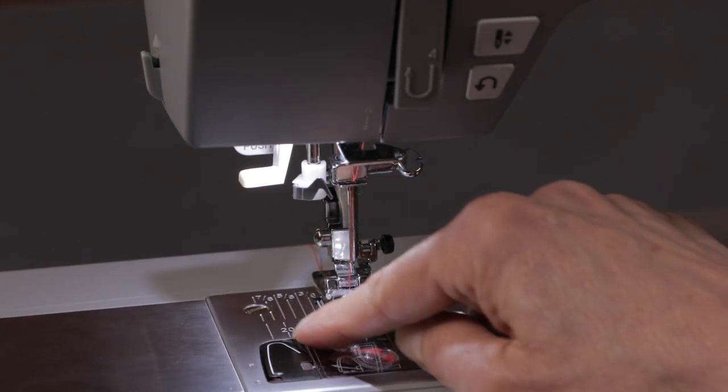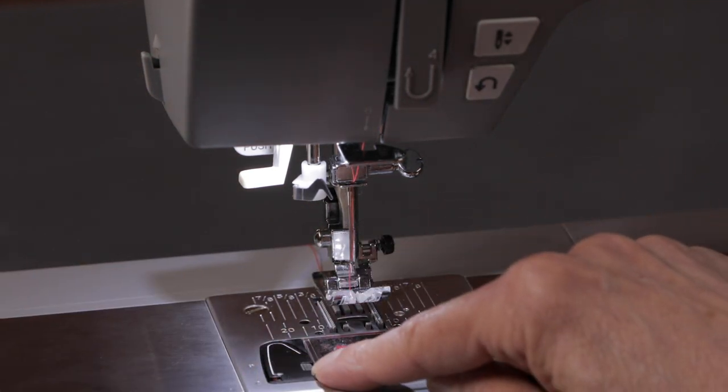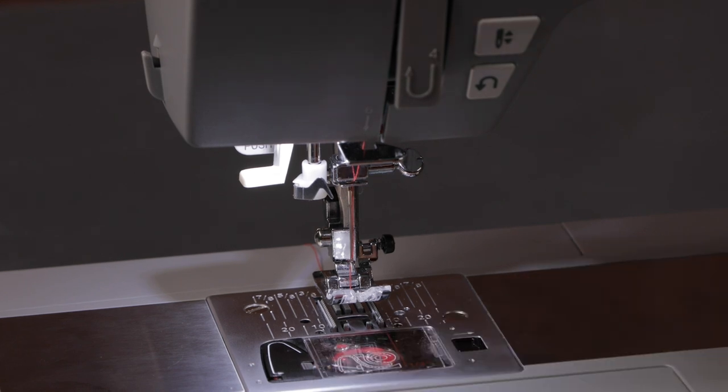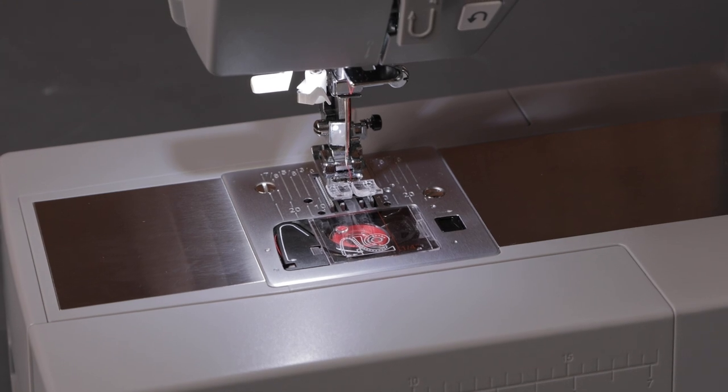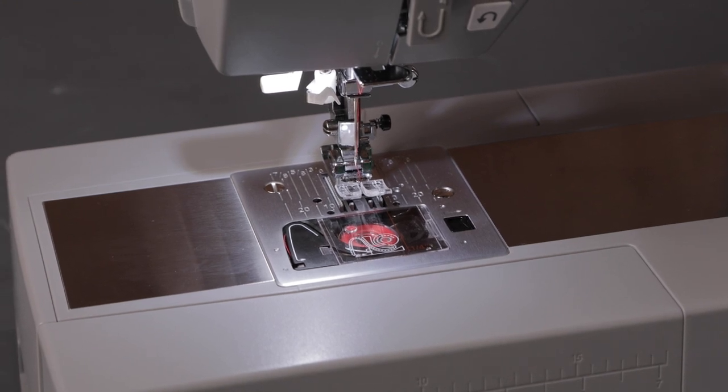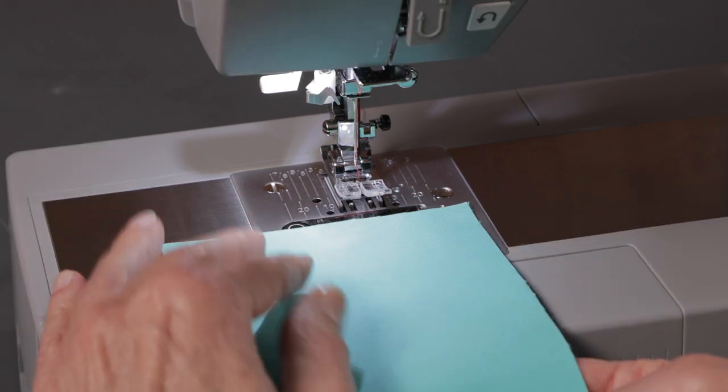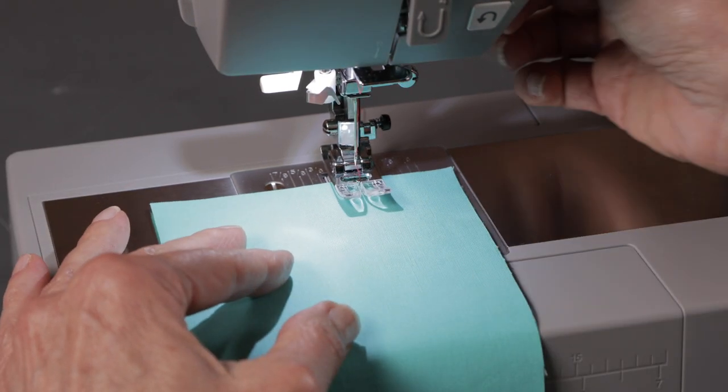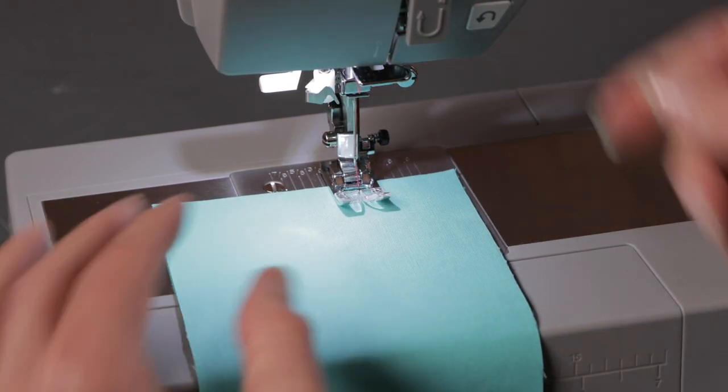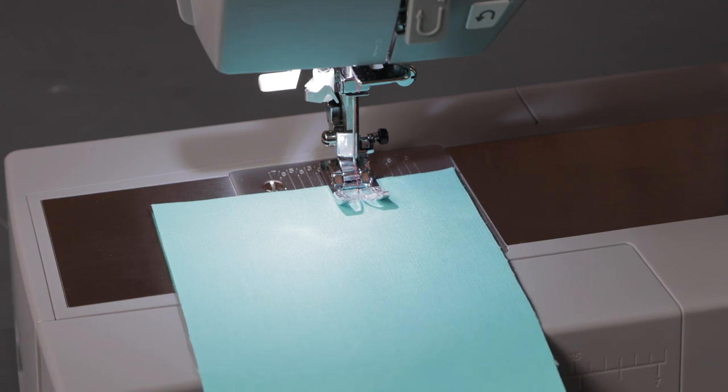Now place your thread underneath the foot. Because we have the drop and sew bobbin system, it staged my bobbin thread for me, so there's no need to draw up the bobbin thread now to start sewing. Let's test the stitch to make sure we threaded the machine correctly. Place the fabric underneath the presser foot, lower the presser foot lifter, and step on the foot control to start sewing.